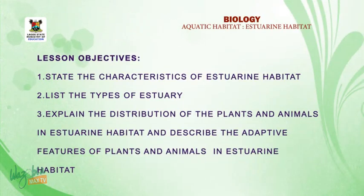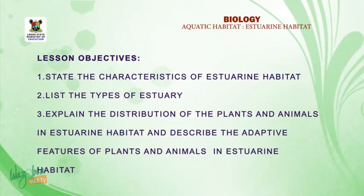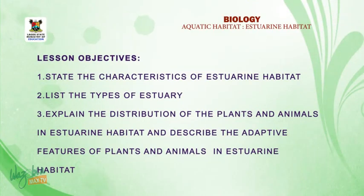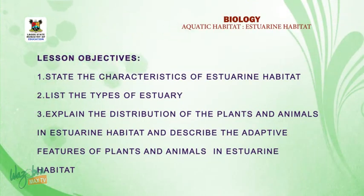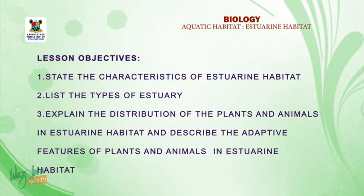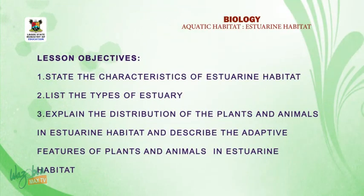One: state the characteristics of estuarine habitat. Two: list the types of estuarine habitat. Three: explain the distribution of plants and animals in estuarine habitats. Four: describe the adaptive features of plants and animals in estuarine habitats.